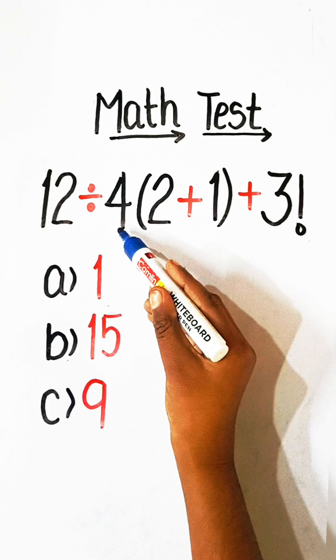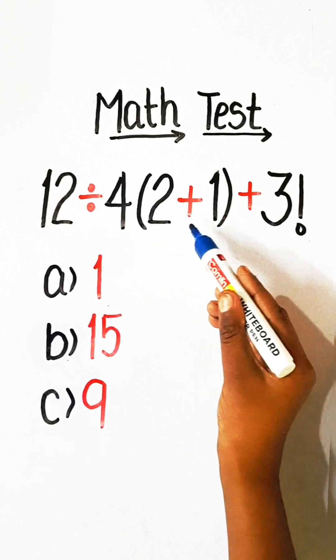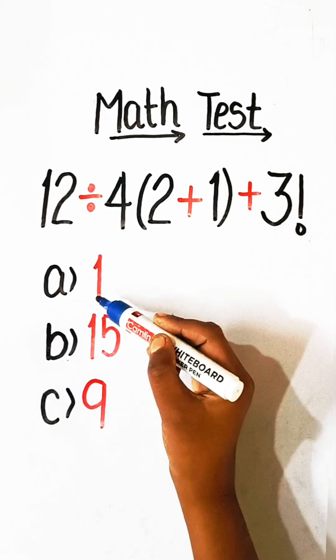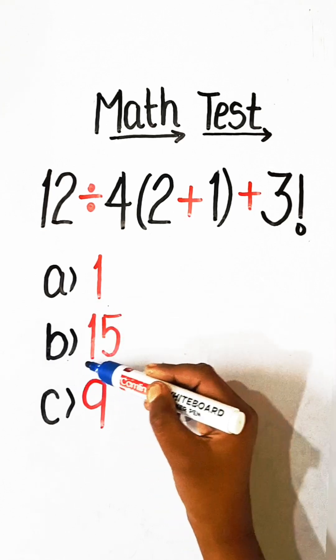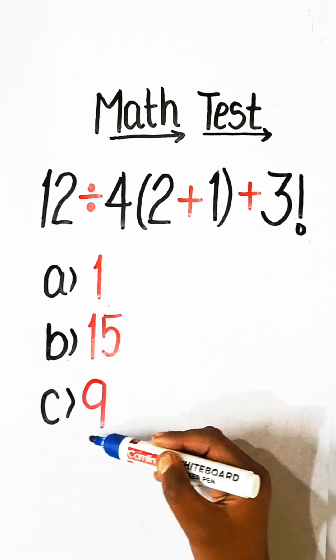12 divided by 4 under bracket 2 plus 1 plus 3 factorial equals to what? Option A, 1. Option B, 15. Option C, 9.